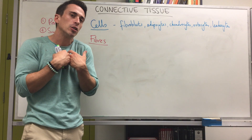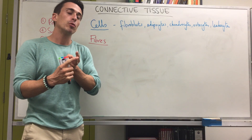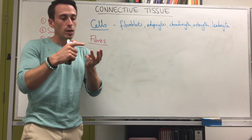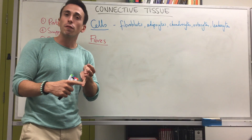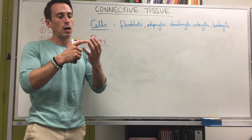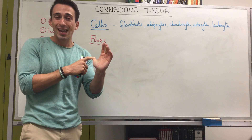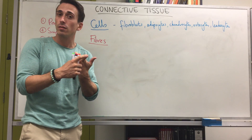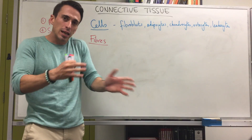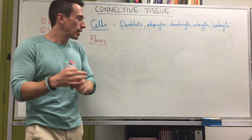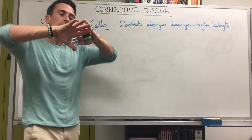Often the extracellular matrix dictates whether the specific type of connective tissue is hard, soft, or fluid. For example, hard connective tissue includes bone and cartilage; fluid connective tissue includes blood and lymph; and soft connective tissue includes loose and dense connective tissue, which we'll talk about in the next couple of videos.